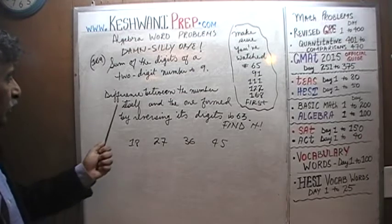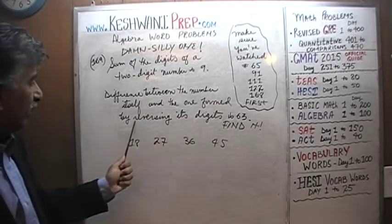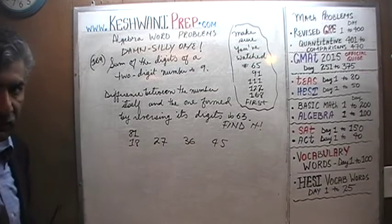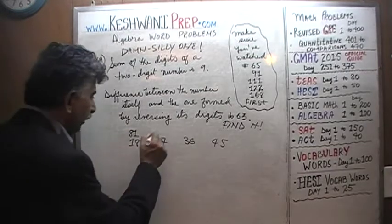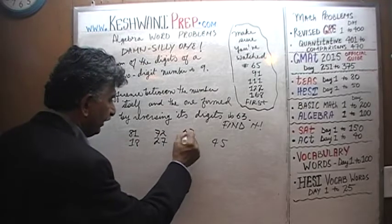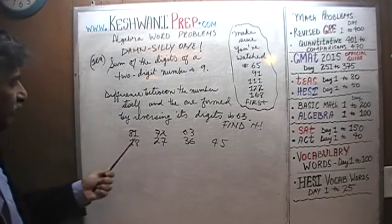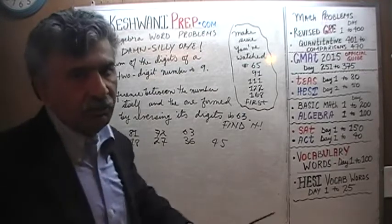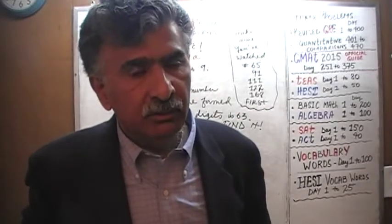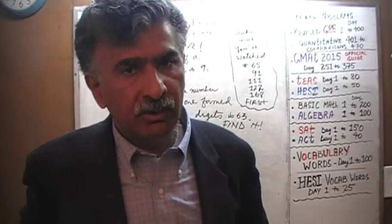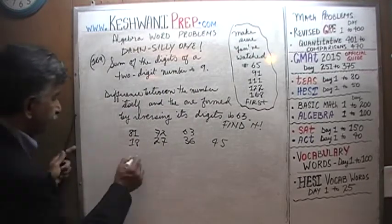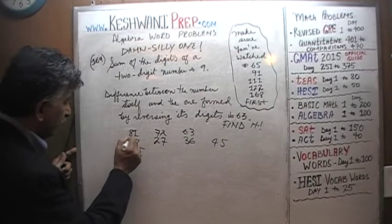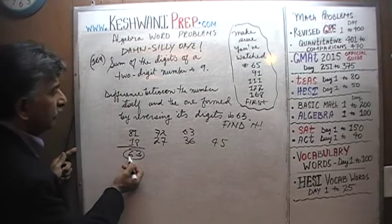They tell us the difference between the number itself and the one formed by reversing the digits. Let's reverse them: eighty-one becomes eighteen, seventy-two becomes twenty-seven, thirty-six becomes sixty-three, and so forth. There are only four scenarios and one of them has to work. Let's try: eighty-one minus eighteen — eight minus one is seven, and seven minus one is six — the difference is sixty-three.